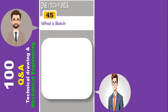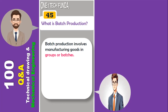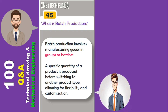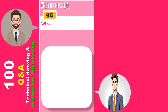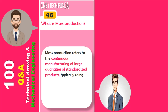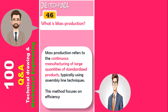What is batch production? Batch production involves manufacturing goods in groups or batches. A specific quantity of a product is produced before switching to another product type, allowing for flexibility and customization. Mass production refers to the continuous manufacturing of large quantities of standardized products, typically using assembly line techniques, focusing on efficiency and high output of identical items.